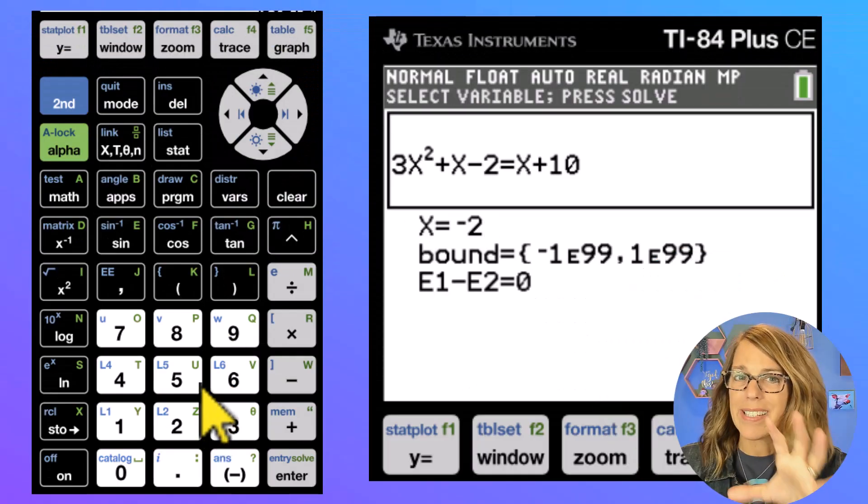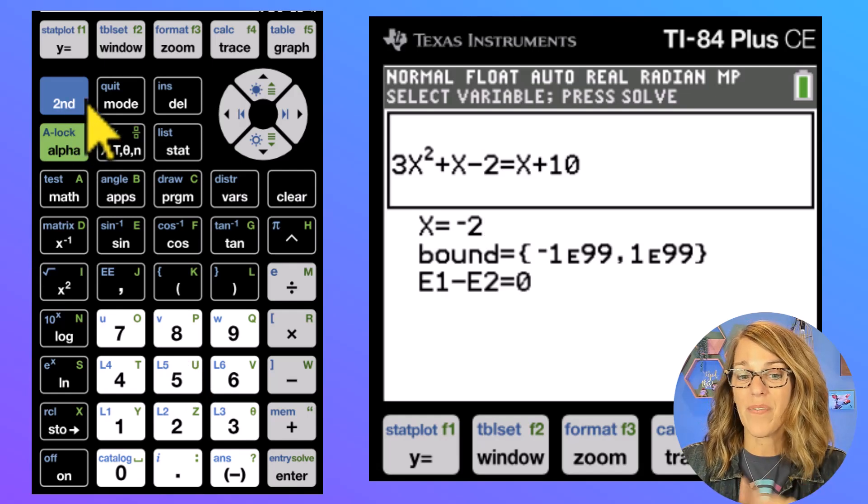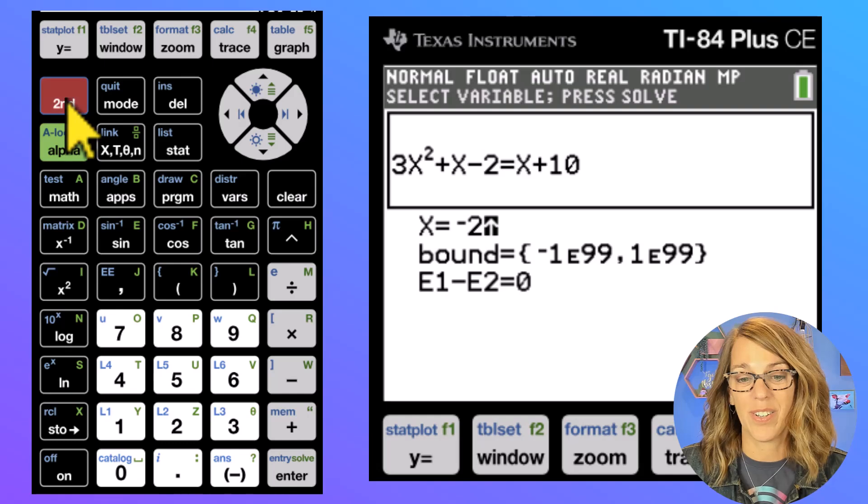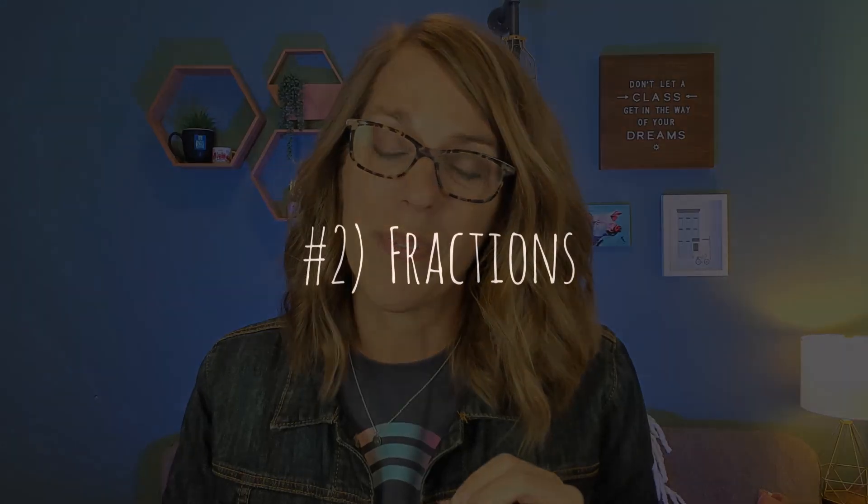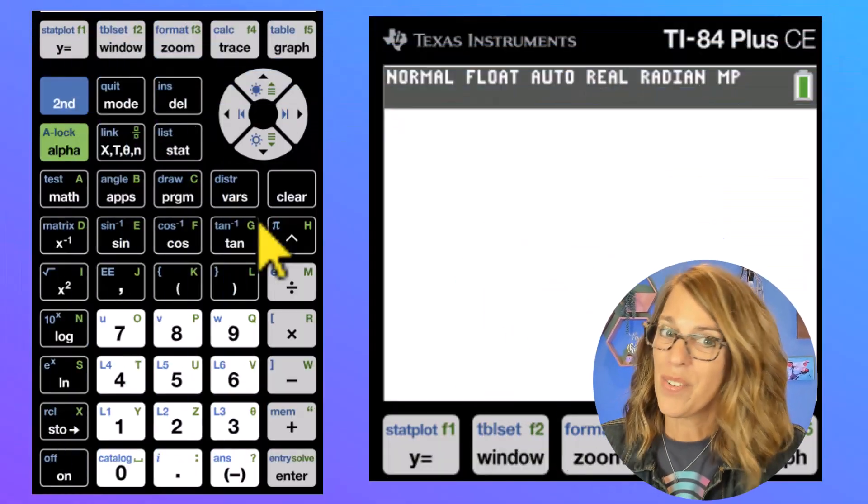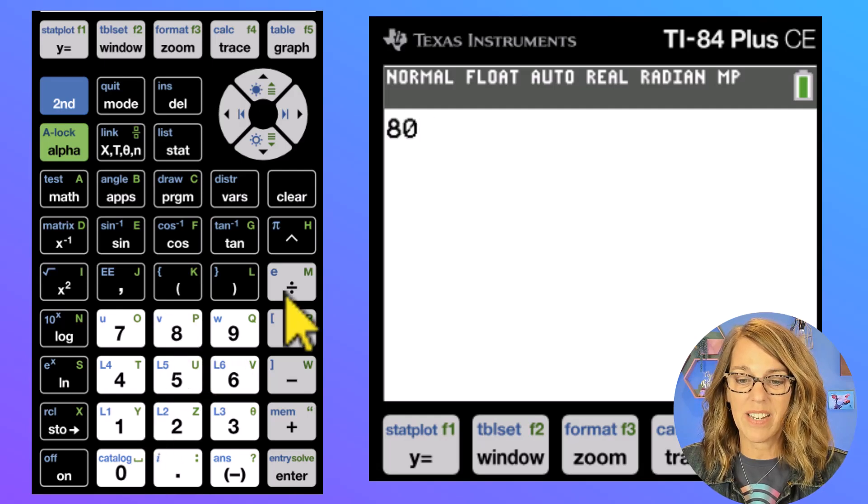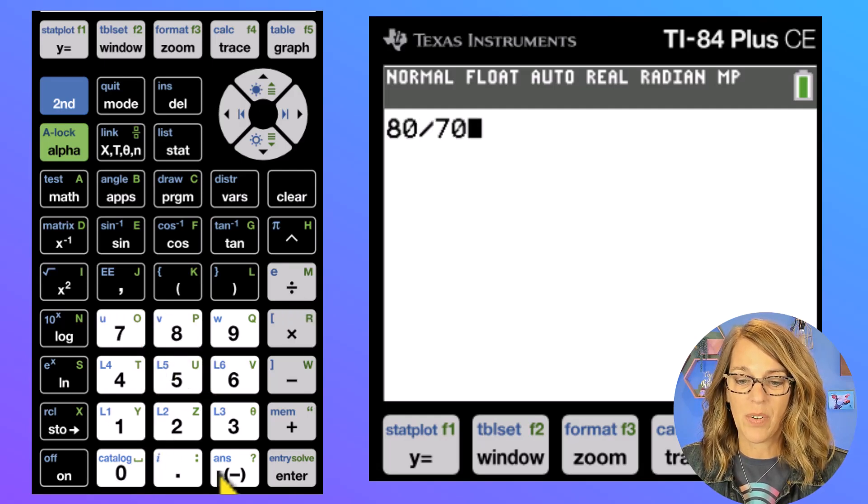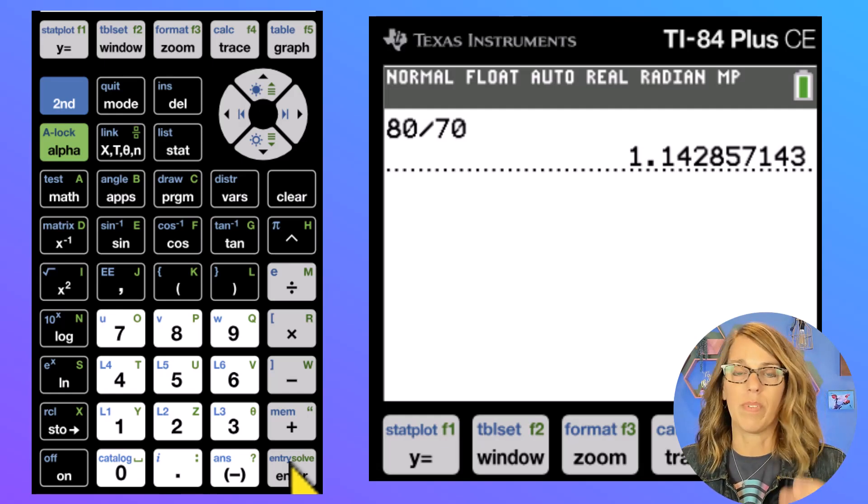Let me start by exiting the equation solver. And I do that by hitting my second button followed by mode for second quit. So second and then quit. Okay, so my next life changing tip are fractions in the calculator. Now your calculator will only give you answers in terms of a decimal.